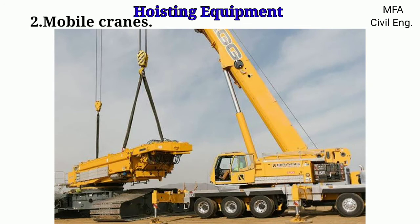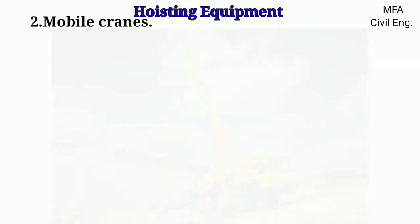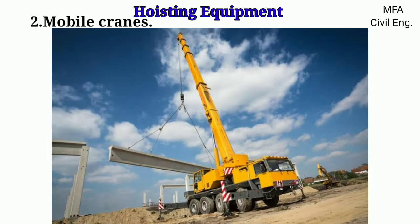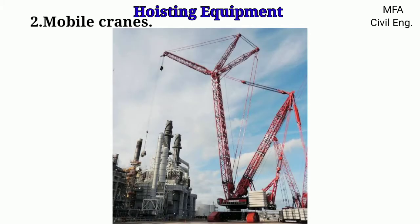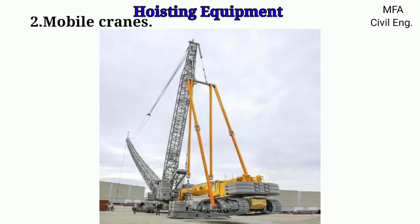Mobile cranes are mounted on a mobile unit, which is either crawler type or wheel type. Wheel cranes have high mobility while crawler-mounted cranes move slowly. Crawler type cranes are capable of moving on rough terrain. These cranes are used for transportation of a load over a short distance.